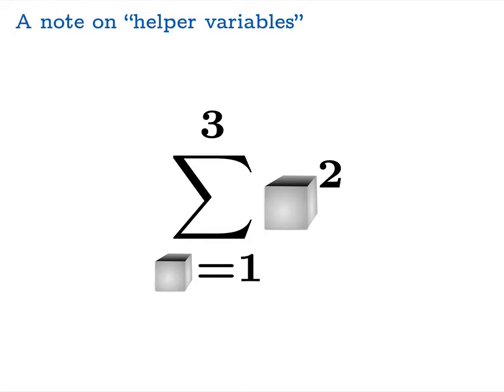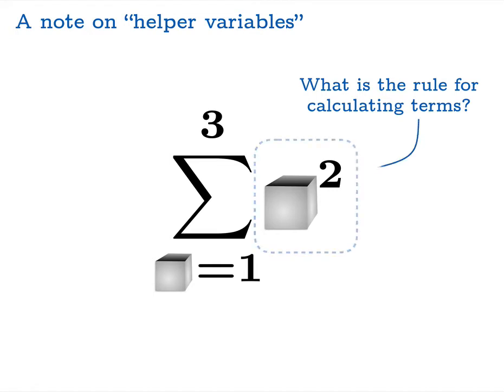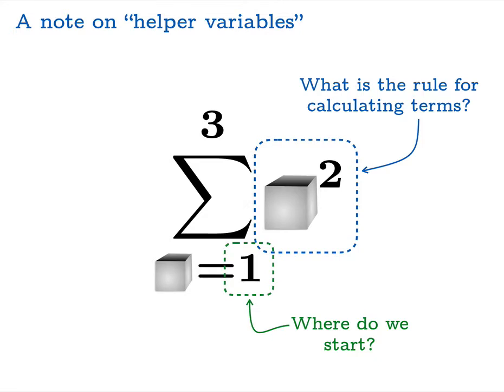What you really need from this notation is three bits of information: what's the rule for calculating terms, where do you start, and where do you stop? And if your notation gives you these three bits of information, then the variable name is really quite irrelevant.